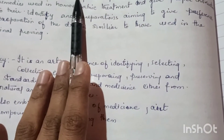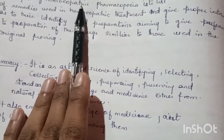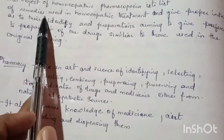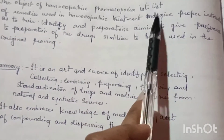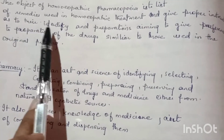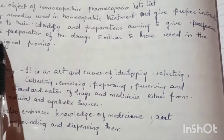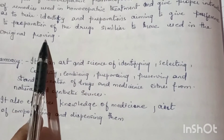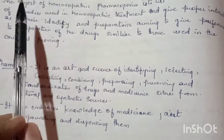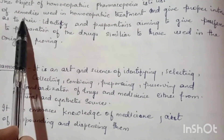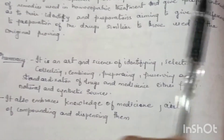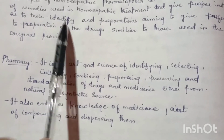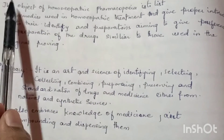Now we will see the objective of homeopathic pharmacopoeia. The objective is to provide a list of remedies used in homeopathic treatment and give proper instructions as to their identity and preparation, aiming to give preference to preparation of the drug similar to those used in the original proving.